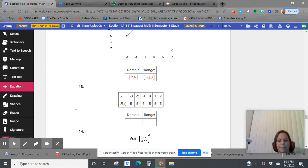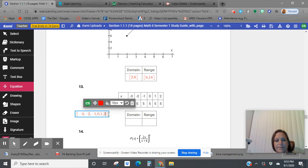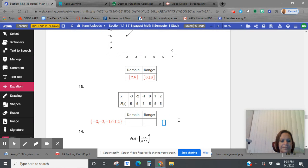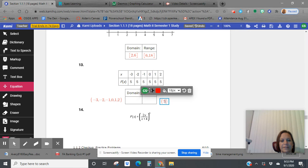Domain of this one needs to be listed out. Because tables want the domain to be listed out as individual discrete dots. So negative three, negative two, negative one, zero, one, two. That's your domain. Range is going to just be five. Remember that if there's a repeating number, we only have to state it once.